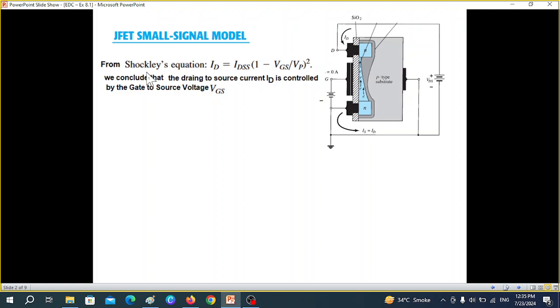Then we'll also talk about what is known as Shockley's equation. This formula is very familiar you must have learned in chapter number 7. And from here we conclude that the drain to source current ID is controlled by the gate voltage to source voltage VGS because IDSS and VP is generally constant for a particular FET.